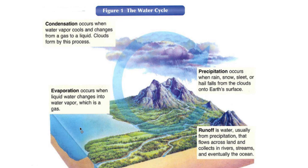Evaporation: when temperature increases, liquid changes into gas — we call that process evaporation. Later on, the gas particles in the cloud change into rain, snow, or sleet.